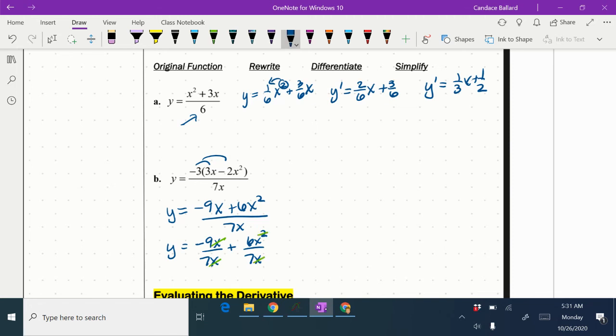So I rewrite it again as y equals negative 9/7, because my x's cancel, plus 6/7x.